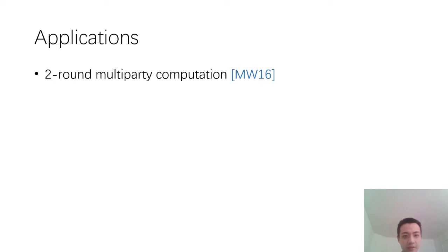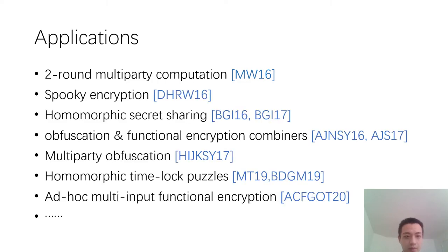Multi-key FHE has found many applications in cryptography. The first application is two-round multi-party computation in MW16. And later, this notion was also found useful in other areas, such as spooky encryption, homomorphic secret sharing, obfuscation and functional encryption, multi-party obfuscation, homomorphic time-lock puzzles, multi-input functional encryptions, etc.